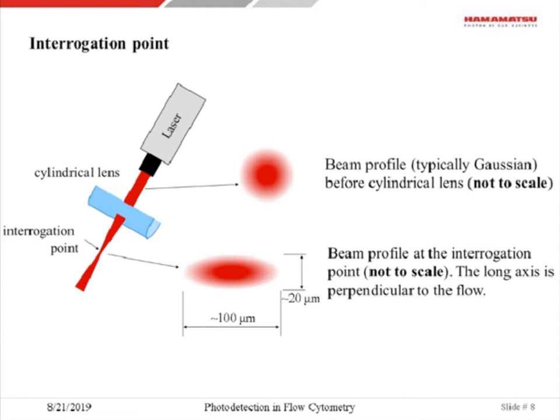Let's look more closely at the interrogation point. The interrogation point is defined by the light from a laser. In an ideal situation, when a cell passes the interrogation point, the amount of light falling on the cell would be independent of its location in the flow cell. For that to happen, we would like the light density in the interrogation point to be uniform. However, the output from a laser has a Gaussian profile, so one uses a cylindrical lens to stretch the beam profile, typically to sizes of about 100 by 20 micrometers, providing a flatter illumination profile.